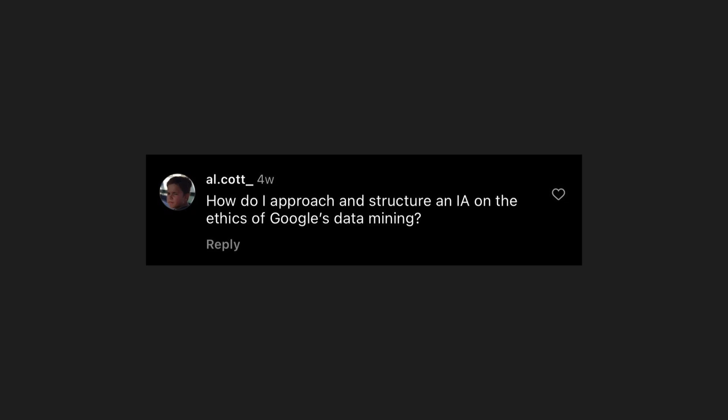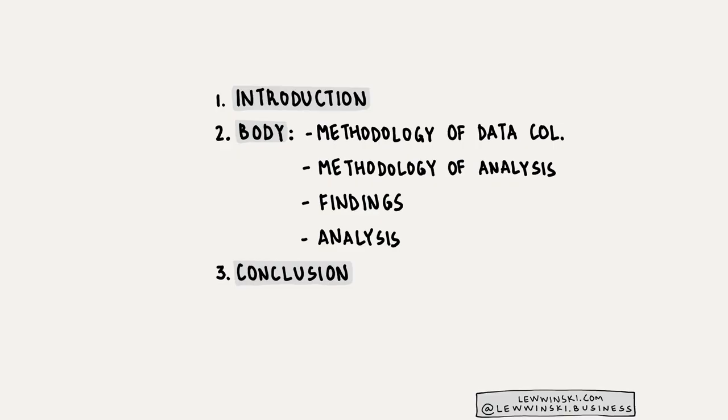L. Cot also asks: how do I approach and structure an IA on the ethics of Google's data mining? Regardless of your IA topic, it should always include three parts: introduction, body, and conclusion. The main body should include: methodology of data collection (primary or secondary research?), methodology of analysis (which business tools, techniques and theories?), your findings from supporting documents or primary data, and then analysis using those business tools. Here's a summary.